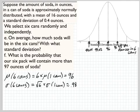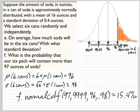What is the probability that our six pack will contain more than 97 ounces of soda? So 97 ounces or more is this area. 97 is almost exactly one standard deviation above. And so I do normal CDF. The lower bound for my shaded region is 97. The upper bound is just going forever. I just put four nines. Lower bound is 97. Upper bound is off forever. My mean is now 96. Standard deviation is 0.98. And that tells me that 15.4% of cans will have... 15.4% of these six packs will have 97 ounces or more of soda in them.